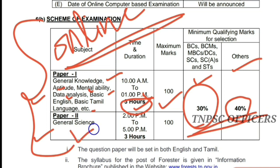Paper 2 is General Science — full science including Physics, Chemistry, and Broad Science. There are 100 questions. The morning session runs from 1 hour to 3 hours, and the evening session runs from half an hour to 3 hours. That's the timing for Paper 2.